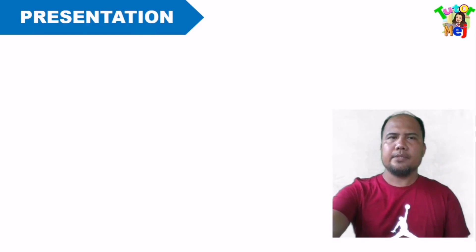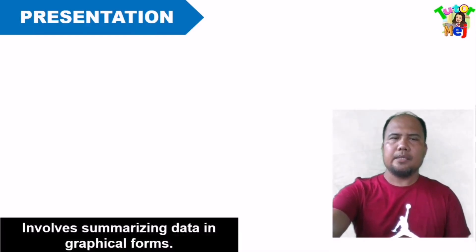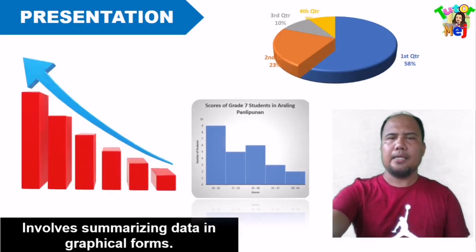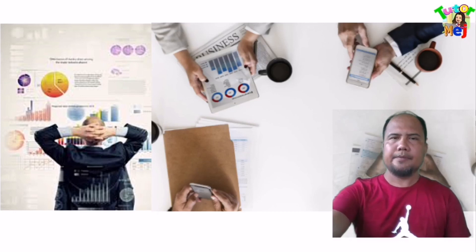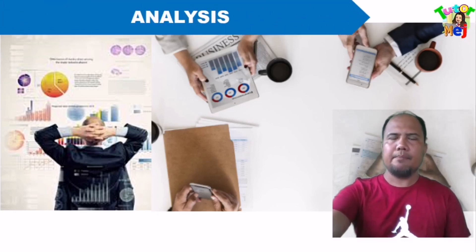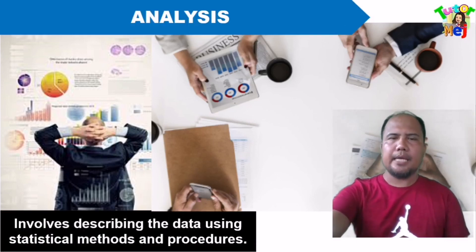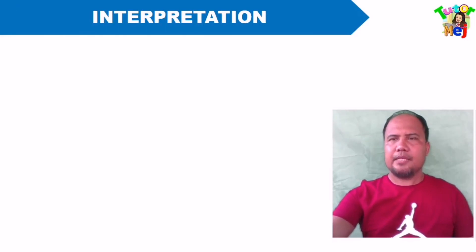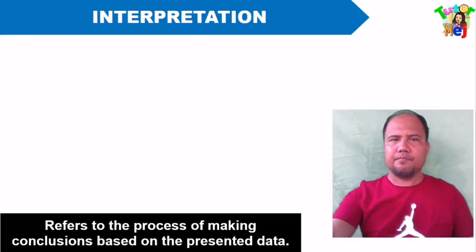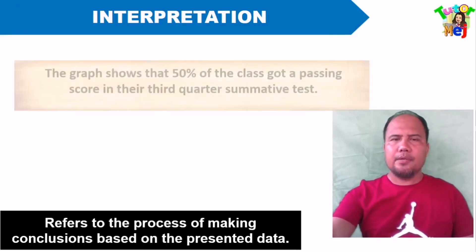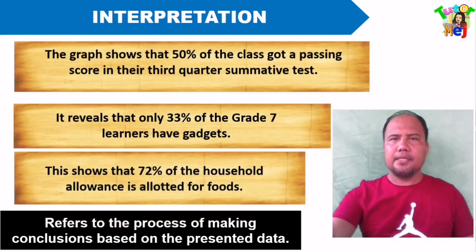Next, presentation. This involves summarizing data in graphical forms. Next, we have analysis. This involves describing the data using statistical methods and procedures. And the last one is interpretation. This refers to the process of making conclusions based on the presented data.